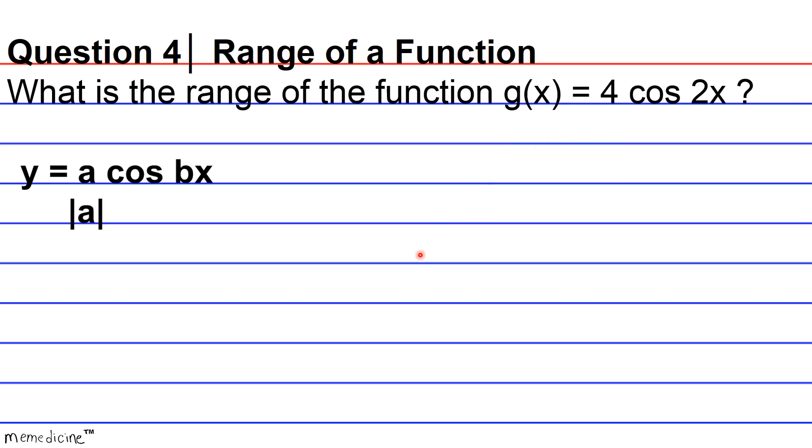So given that the function has an amplitude of 4, that means that it goes up 4 units from the X axis as well as 4 units down from the X axis. Hence, the range is going to be -4 ≤ y ≤ 4, okay? So the interval between negative 4 and 4 inclusive.